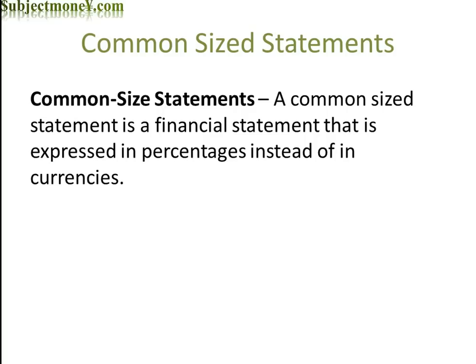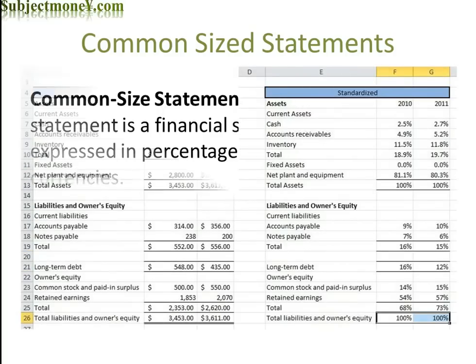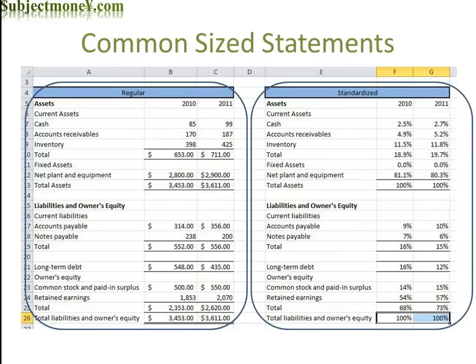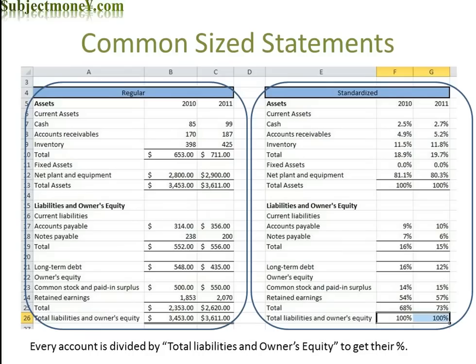Here you can see that we have a regular balance sheet that states all of the different accounts in currency. And then here, we've basically just made every account as a percentage of total liabilities and owner's equity.